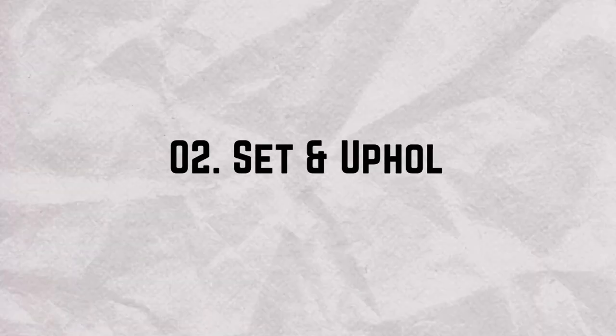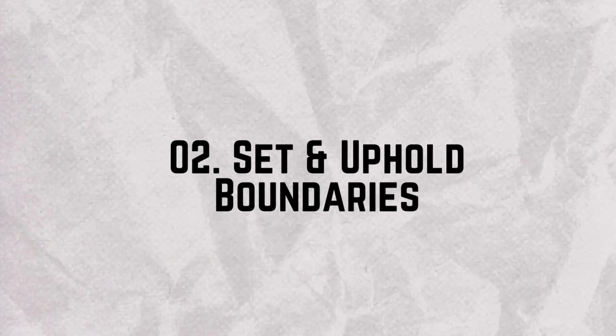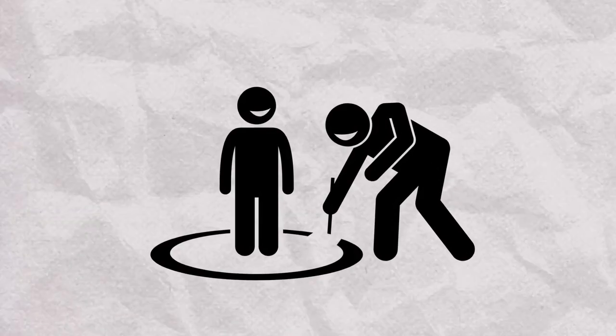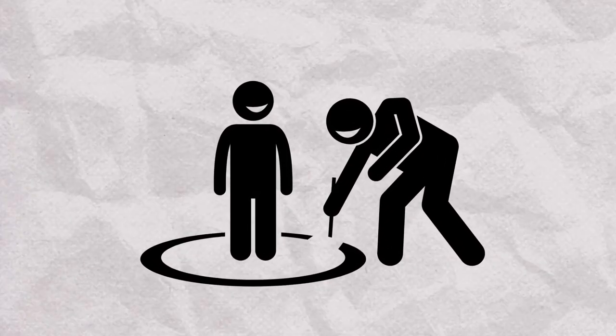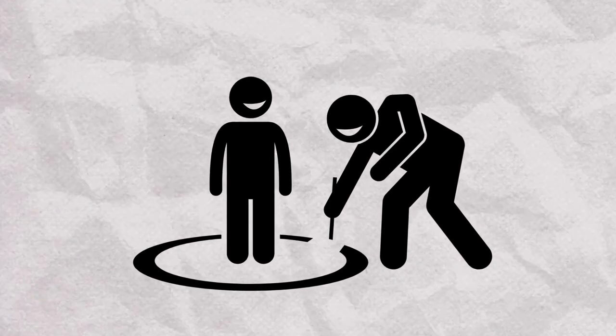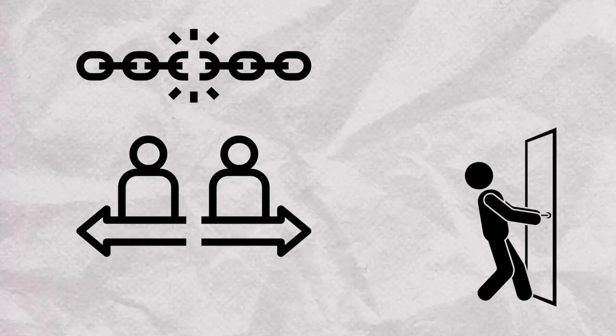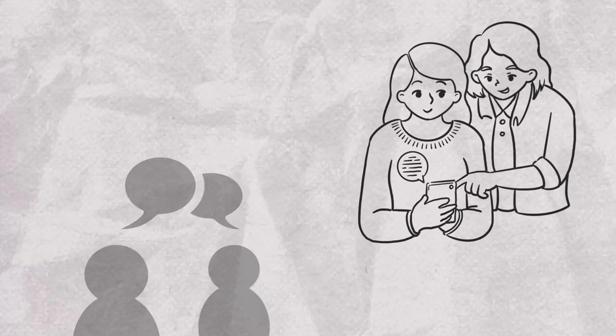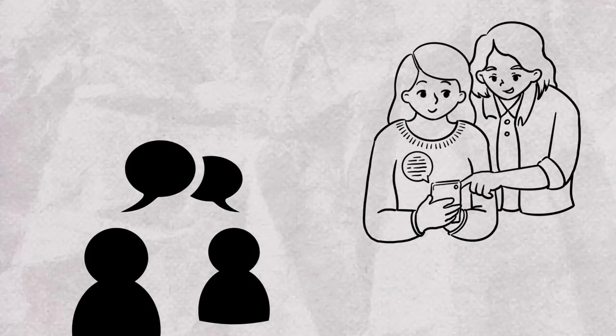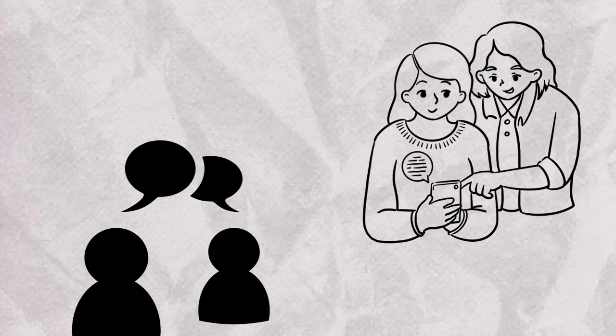Number two, set and uphold boundaries. Establishing boundaries, even if your parents don't respect them, is essential for your well-being. Boundaries protect you emotionally and physically. They can involve limiting your time around toxic family members or creating safe spaces, like adding locks to your room. Communicate your boundaries calmly when you can, but remember that setting boundaries is primarily about protecting yourself.